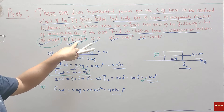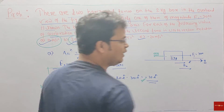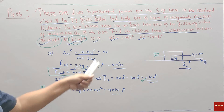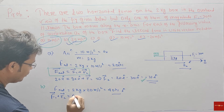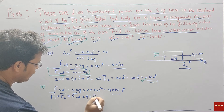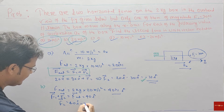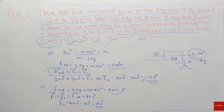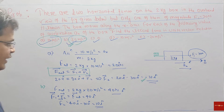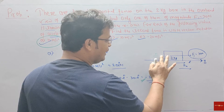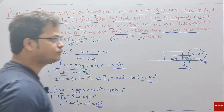The net force is 40 Newton i-cap. F1 plus F2 equals F-net, which is 40 i-cap. F1 is 30 i-cap, so F2 equals 40 i-cap minus 30 i-cap, which is 10 i-cap. So when acceleration is 20 m/s², the unknown force F2 is 10 Newton along the positive x-axis direction.